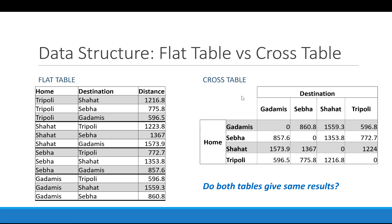The difference is in how you read each table. In a flat table, you need to read the whole row to get the full information — for example, going from Tripoli to Ghadames the distance is 596.5. In a cross table, you need to cross between two headers: the row header for home city, say Tripoli, and the column header for destination, say Ghadames — crossing them arrives at the distance value.